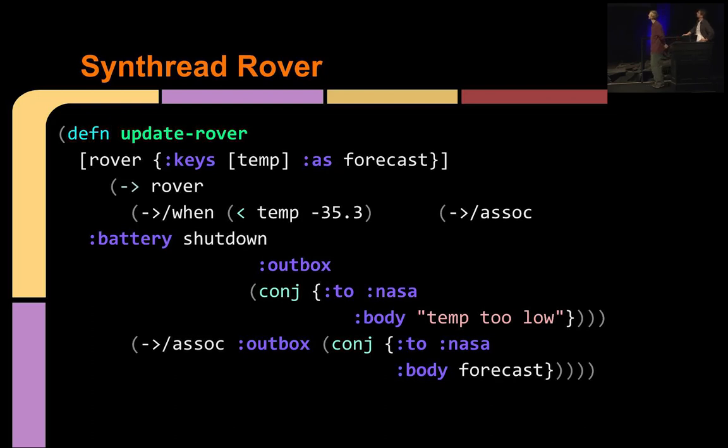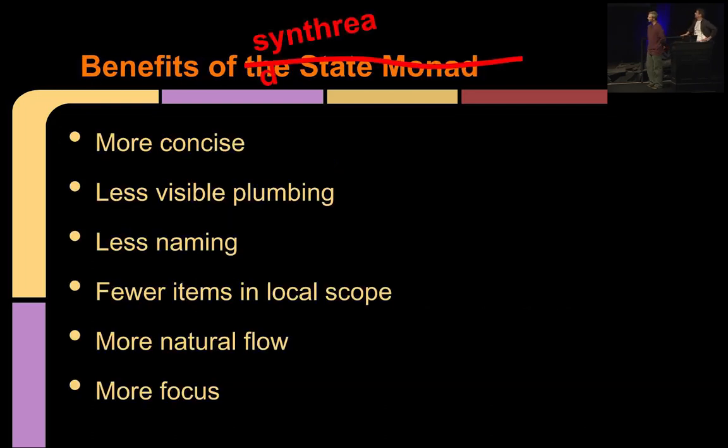So conj is friendly with these threading concepts. And then, regardless of whether the when operates or not, whether it operates on its body, either way, whether the temperature is low or high, you get a rover topic coming out that flows right into the final thread assoc there to update the outbox one last time. Well, I think I got it. Let's look at the benefits of the state monad. Here. They are the same benefits. We have more concise code. Less visible plumbing. And we didn't name things nearly as often. And fewer items in local scope. And we get to focus on rover code. Because we're rocket scientists.